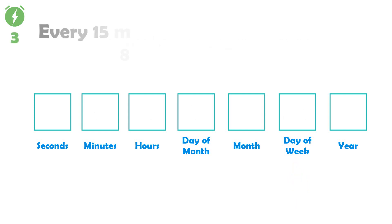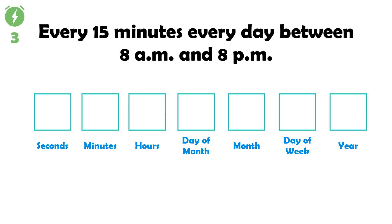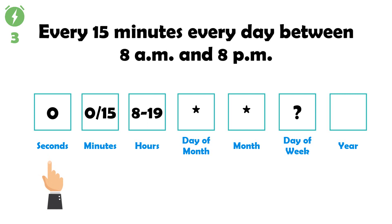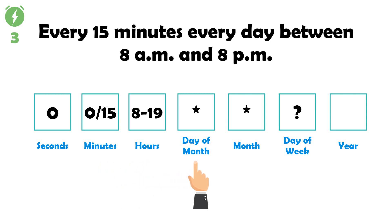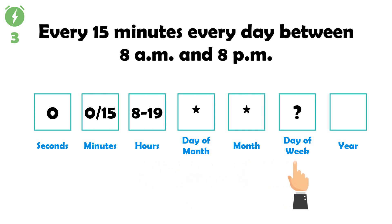Third example: every 15 minutes every day between 8 a.m. and 8 p.m. — '0 0/15 8-19 * * ?'. Zero in seconds, '0/15' in minutes means every 15 minutes starting from minute zero, '8-19' in hours means between 8 a.m. and 8 p.m., star in day of month means every day, star in month means every month, and question mark in day of week means no specific day has been specified.